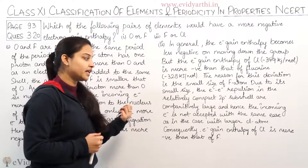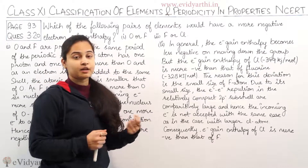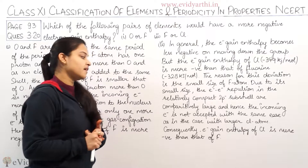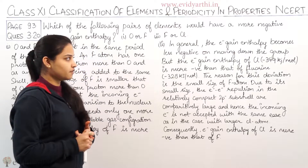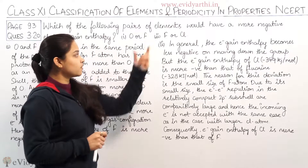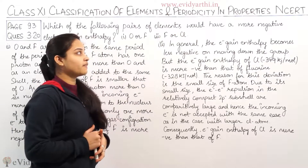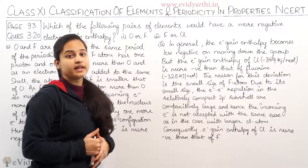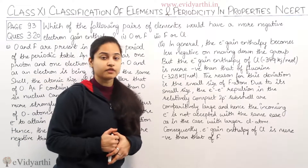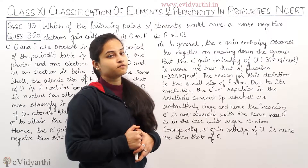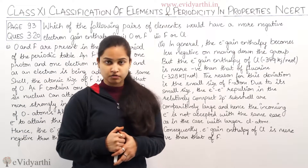Consequently, the electron gain enthalpy of chlorine is more negative than that of fluorine. So chlorine has the more negative value of electron gain enthalpy, and I have explained the reason for this deviation from the general periodic trend.